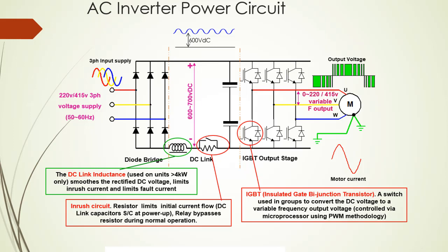This generates the AC current system for the motors in the AC inverter power circuit. In the diagram for the AC inverter power circuit, there is a 220V or 450V three-phase voltage supply at 50 or 60 Hz. There is the diode bridge used for rectification — AC to DC. The DC link inductance is used on units up to 4 kilowatts only to smooth the rectified DC voltage, limit inrush current, and limit fault current.